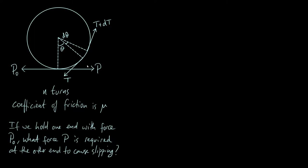We also have a normal reaction force R, because the rope is pushing against the cylinder — that acts in the normal direction, straight outwards. And there is one more force to consider, which is friction. We have a coefficient of friction in this problem, so friction is crucial. Friction acts perpendicular to the normal reaction — along the tangent — so I'll draw on a friction arrow, call that F, and there's a 90-degree angle between R and F.